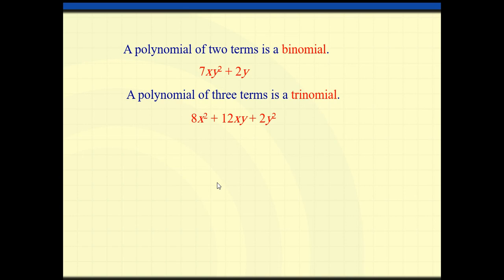Sure, you can call it polynomial. But when I have two terms, it's easier to say binomial, and three terms, trinomial. From 'tri' comes three.